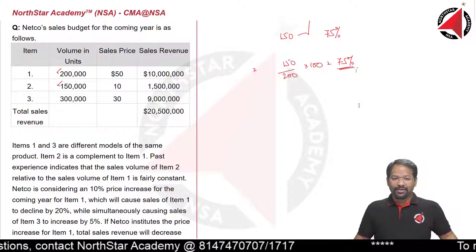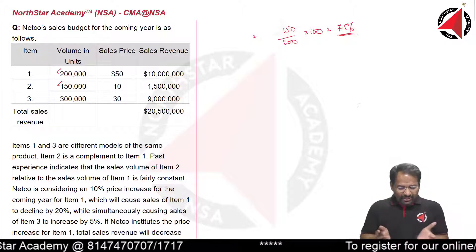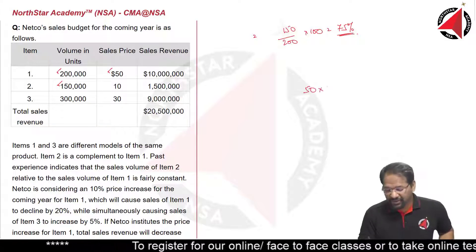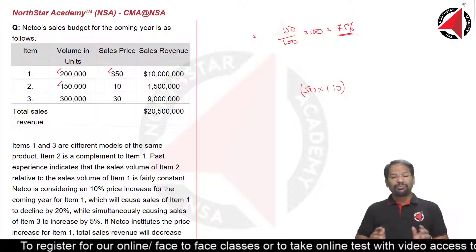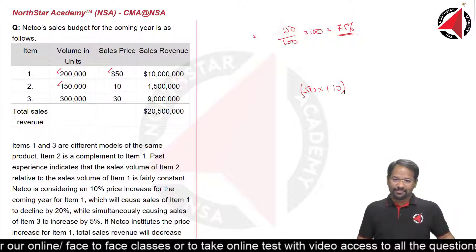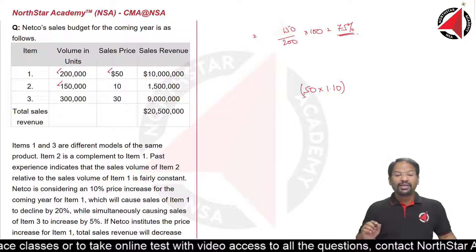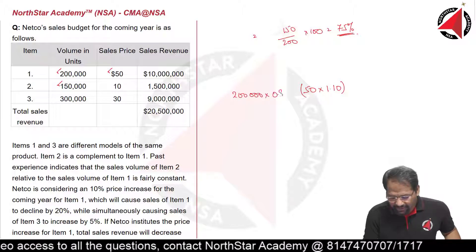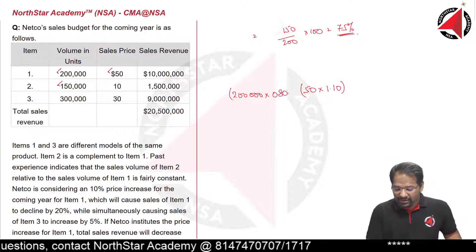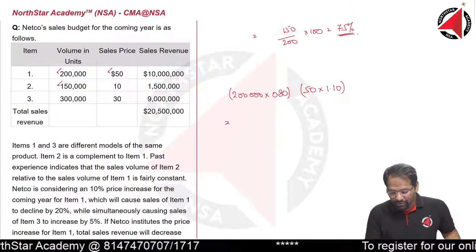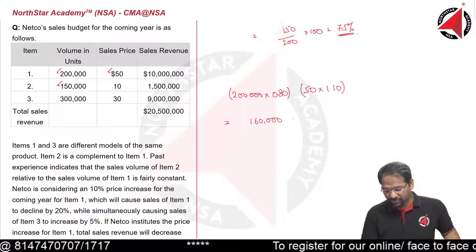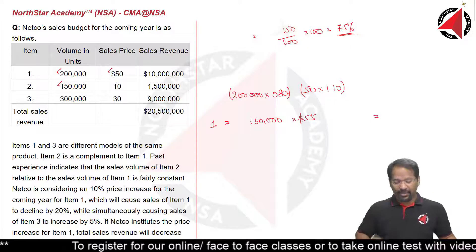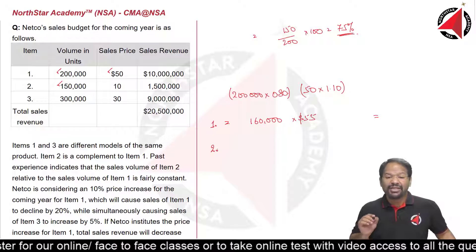Now for Item 1, the new selling price is increasing by 10%, so $50 becomes $55 (i.e., multiply by 1.10). The number of units sold will decrease by 20%, so 200,000 multiplied by 0.80 gives 160,000 units. So Item 1: 160,000 units will be sold at $55 per unit, giving us the new sales revenue for Item 1.